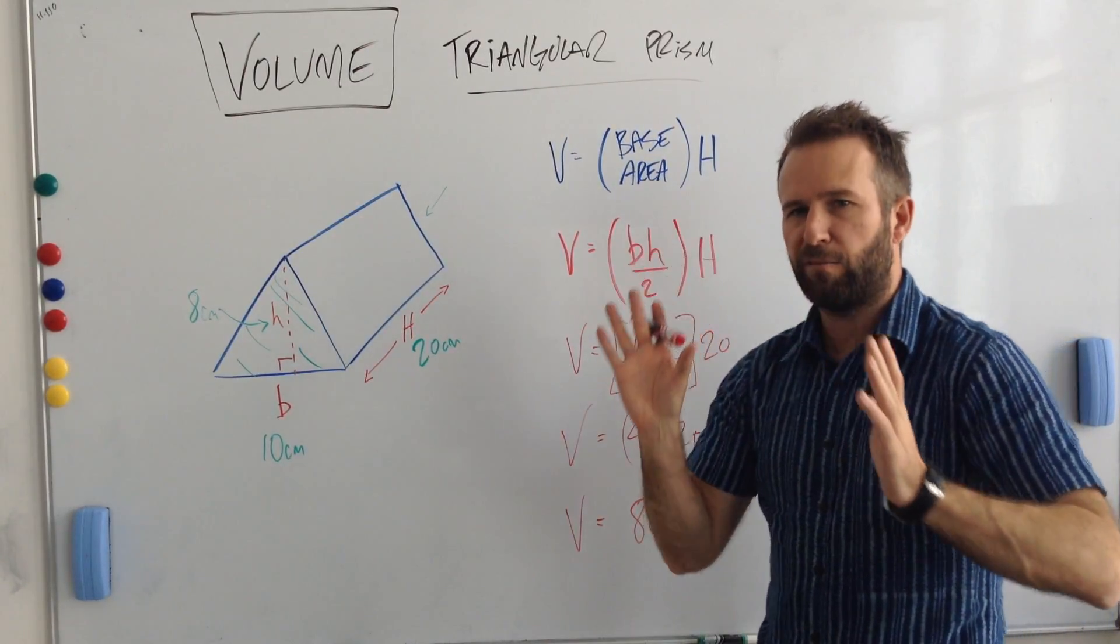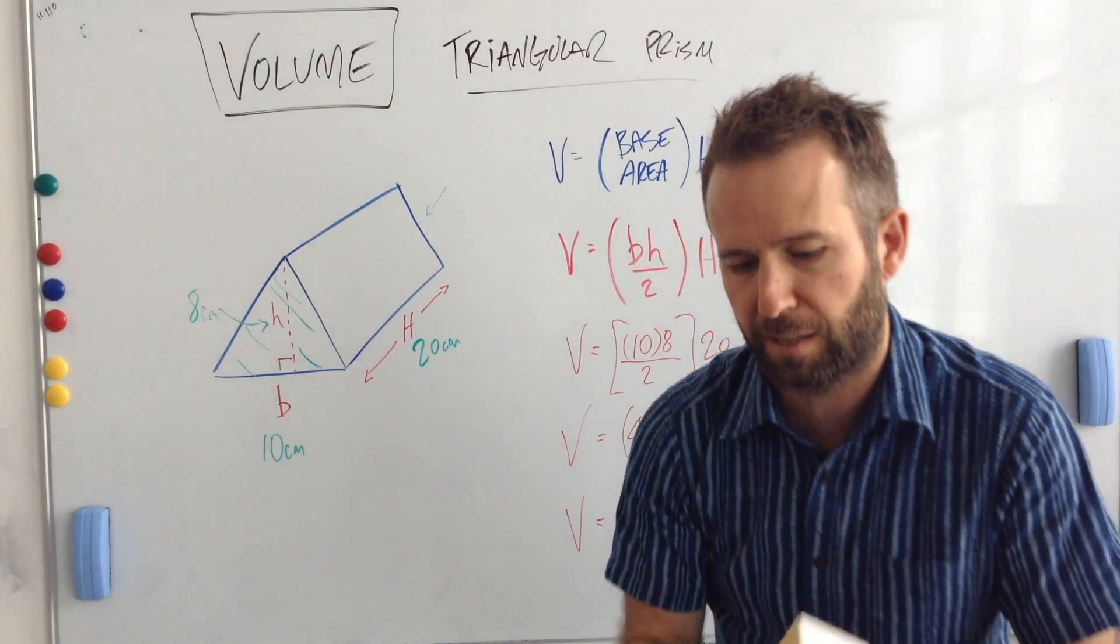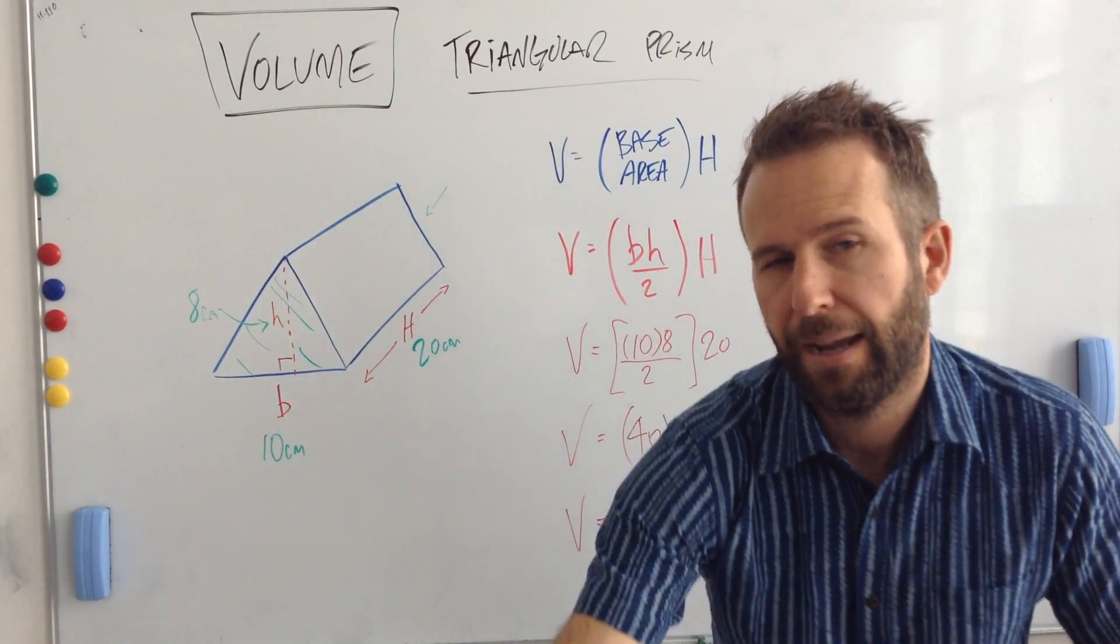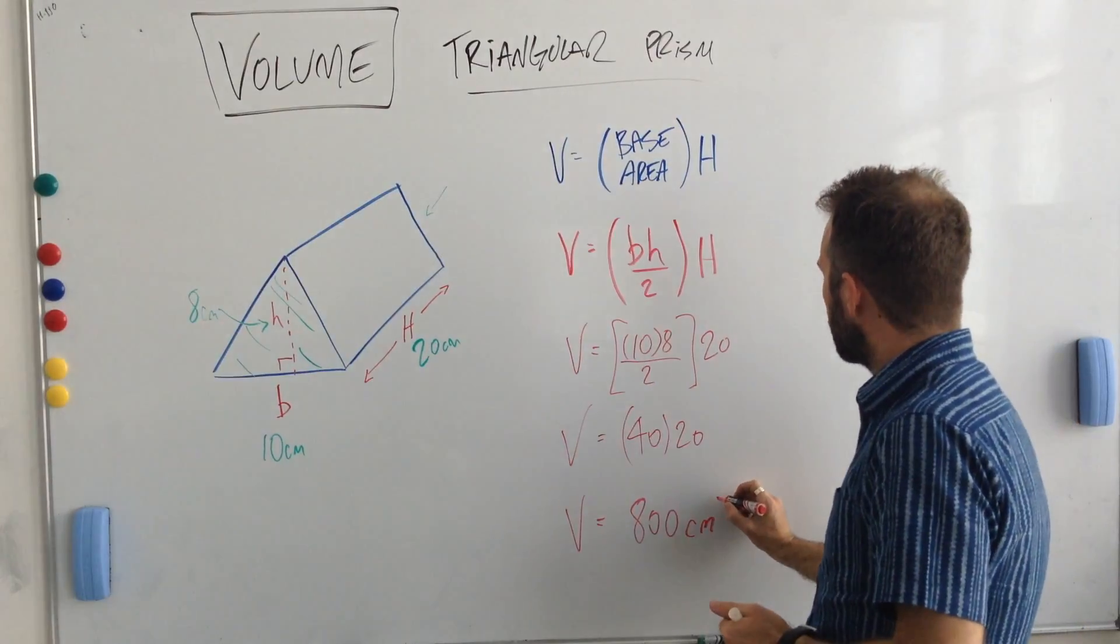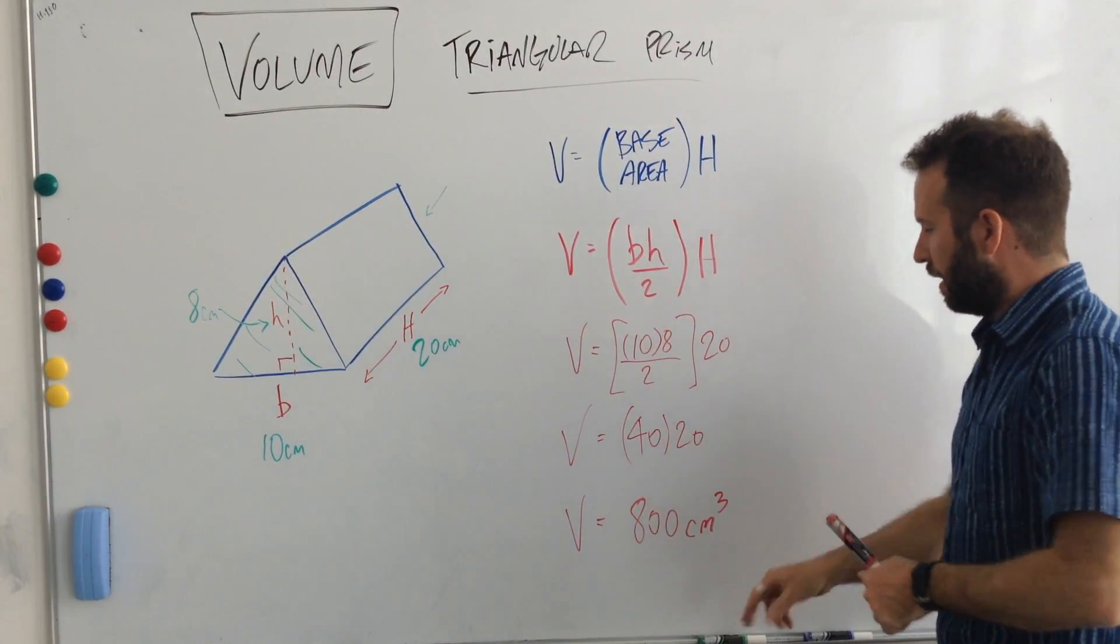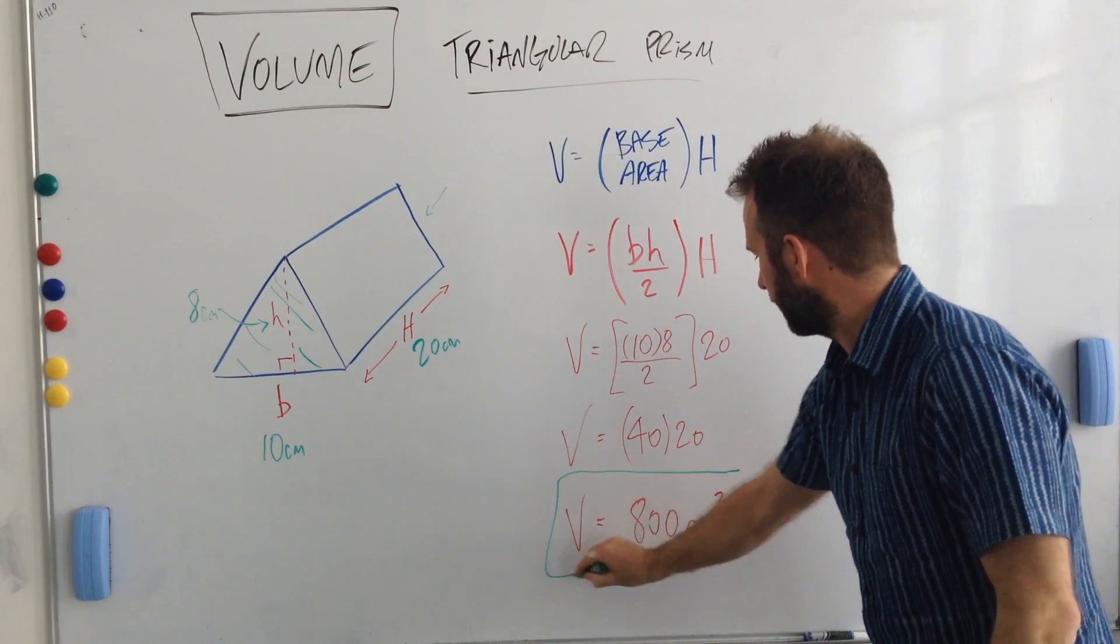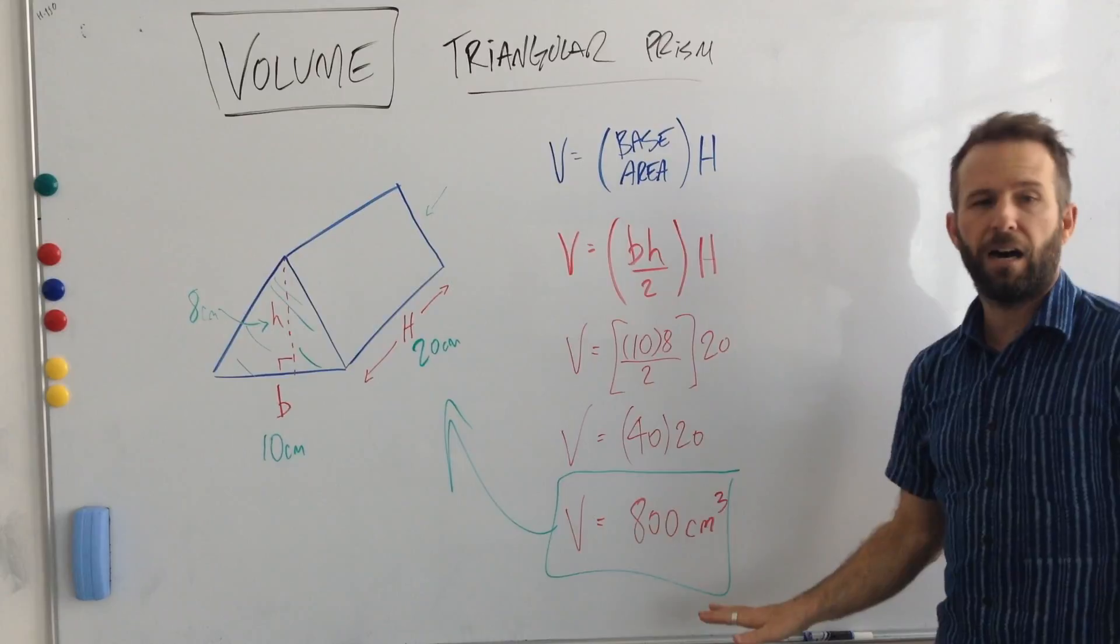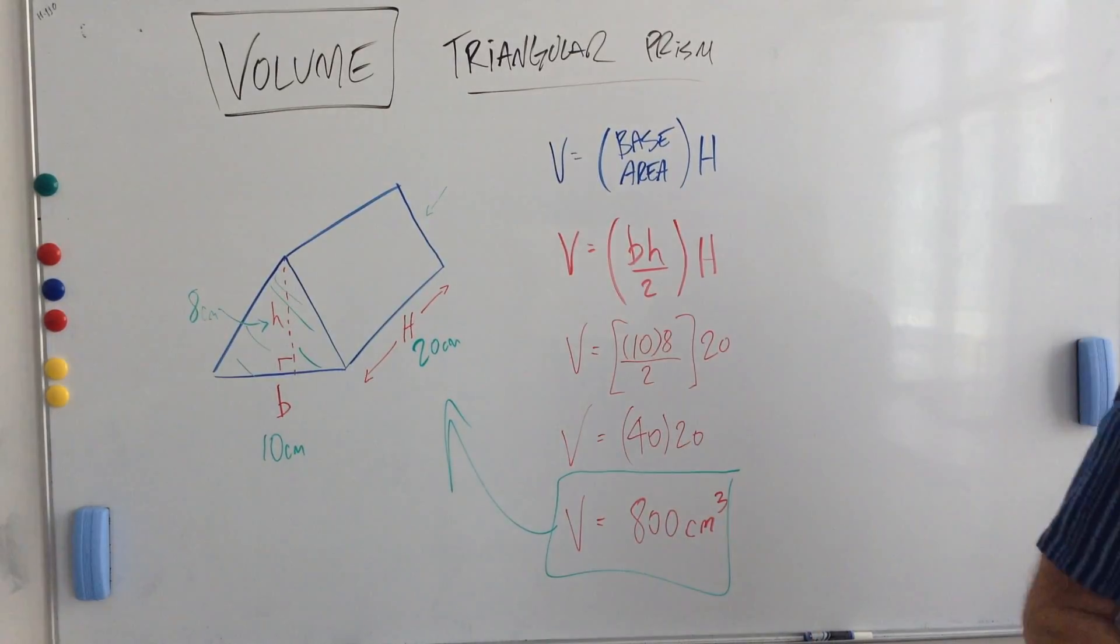And now that we're in volume, we're thinking about it in a three-dimensional way. We're thinking about volume, remember, as the space inside the object. And that space inside the object is a three-dimensional space. So we're into cubic centimeters. So in the end, with these measurements of this triangular prism, its volume is going to be 800 centimeters cubed.